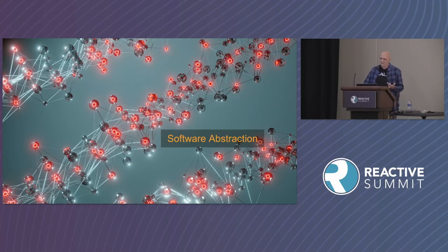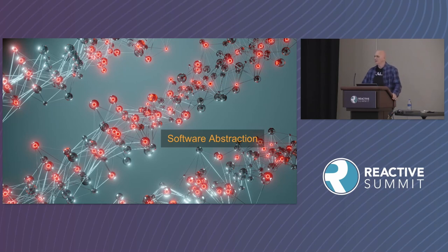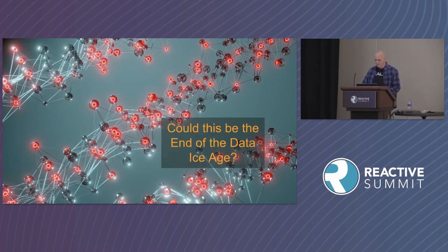Why is the way we write our applications so much influenced by this hardware? What I've been using is something at a higher level of abstraction, and this is what really started to call into question the ways we've been computing. Jonas in his keynote talked about building systems with higher levels of abstraction. I want to give you a closer look, because I think we could be looking at the end of what I call the Data Ice Age.